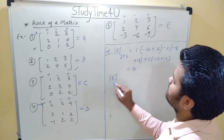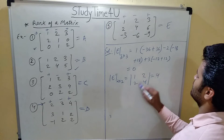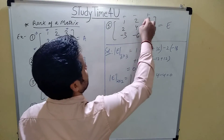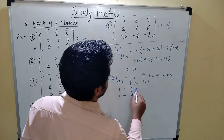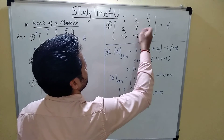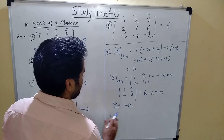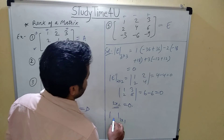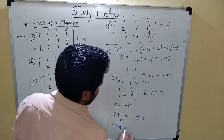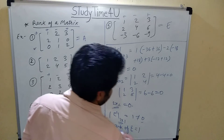We now solve the 2×2 minors. Taking entries 1, 2, 2, 4: 1 into 4 minus 2 into 2 = 0. Taking entries 1, 2, 3, 6: 1 into 6 minus 2 into 3 = 0. All 2×2 minors give 0. So we consider minors of order 1×1. Any single non-zero entry, such as 1, is not equal to 0. Therefore rank of E is 1.